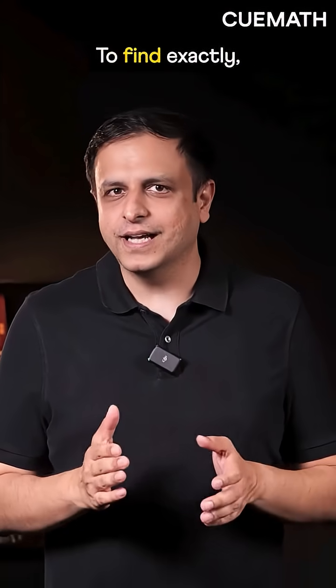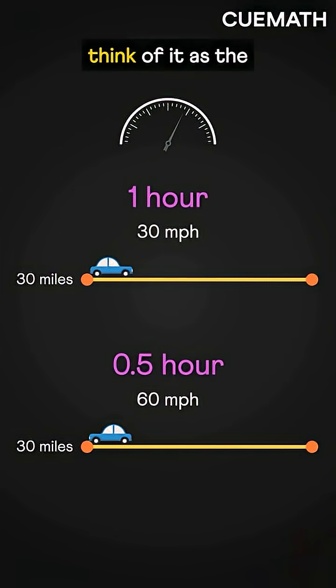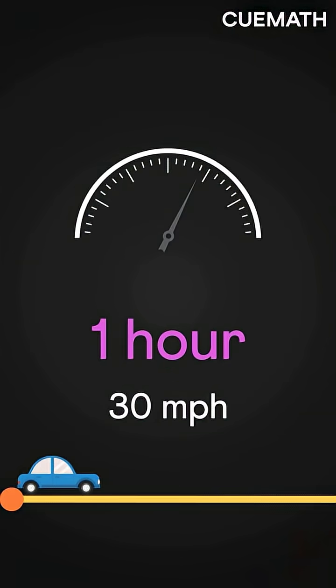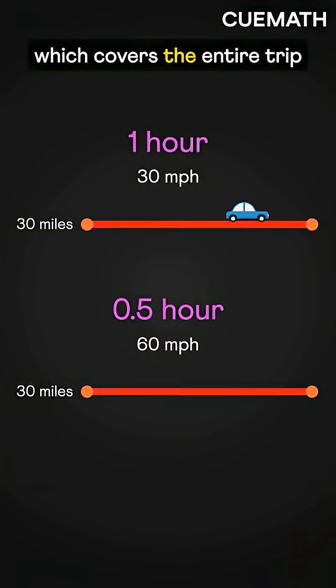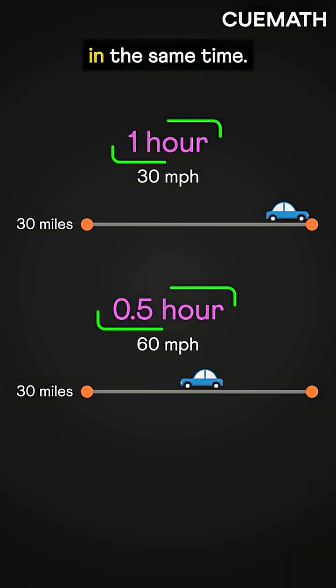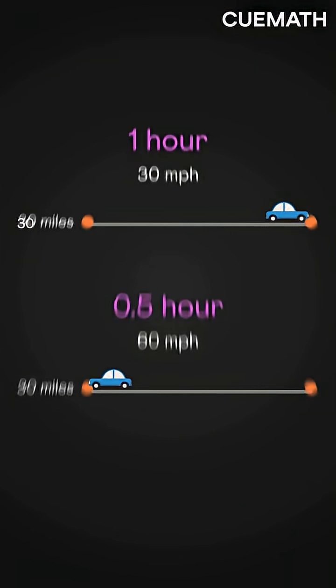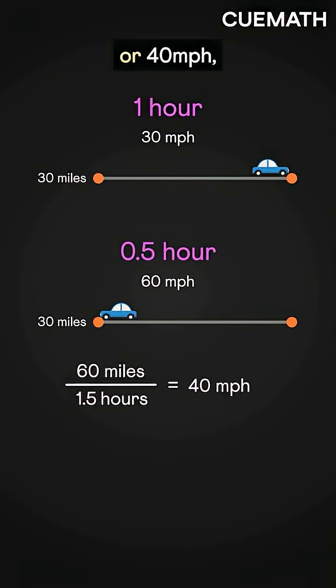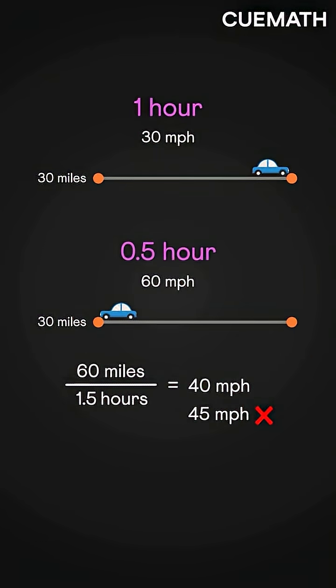To find it exactly, think of it as the constant speed which covers the entire trip in the same time. That's 60 miles in 1.5 hours, or 40 miles per hour — not 45.